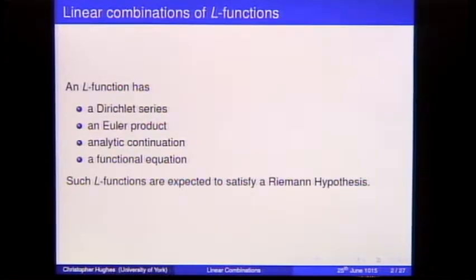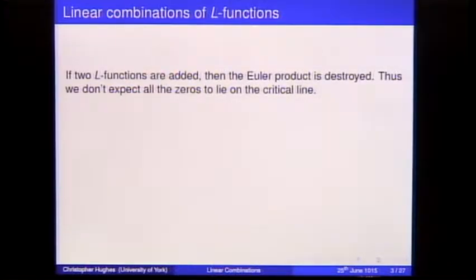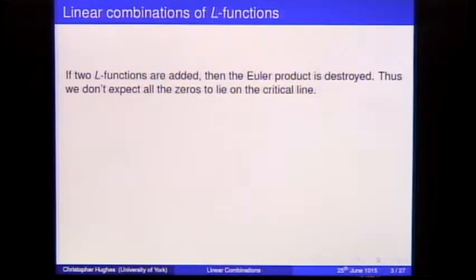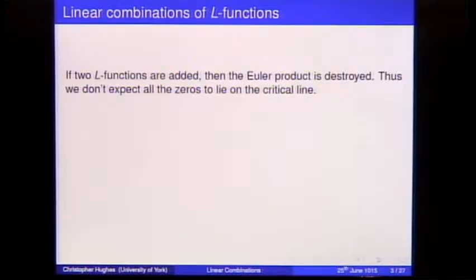What I want to talk about is where you take two L-functions and add them. In some cases this preserves a Dirichlet series and functional equations, but it might not preserve the Euler product — the arithmetic is destroyed. So you can't expect all the zeros to lie on the critical line, much like the previous talk where there was no Euler product and the question was: where are the zeros?